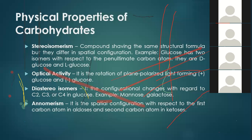Another physical property of carbohydrates is epimerism — configuration changes with regard to the second, third, or fourth carbon in the structure of glucose. Examples include mannose and galactose. Diastereoisomers are isomers that have non-mirror images; they are stereoisomers with two or more organic compounds having at least two stereocenters with different configurations at some stereocenters but the same configuration at others. The last physical property is anomerism — the spatial configuration with respect to the first carbon atom in aldoses, or the second carbon atom in ketoses.